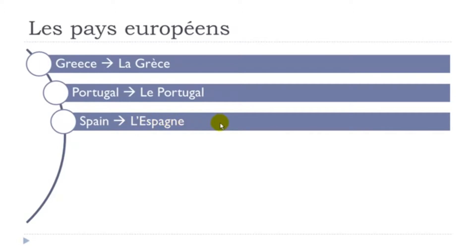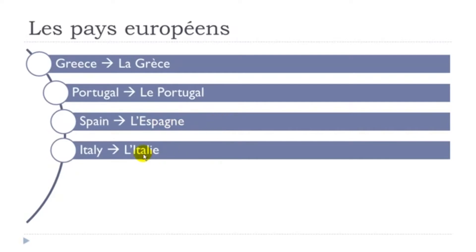L'Italie. You can see that for these two countries — l'Espagne and l'Italie — as they are starting with a vowel, as we saw in a previous lesson, the article is modified and then it's L' like that.